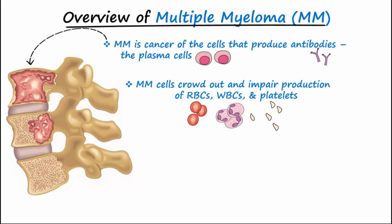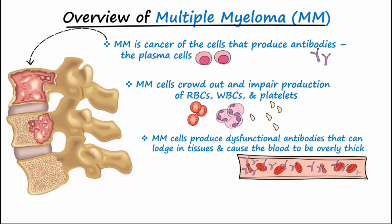These cancerous plasma cells also produce dysfunctional antibodies or parts of antibodies, which can lodge in the kidney and other tissues causing damage, as well as causing the blood to become overly thick.